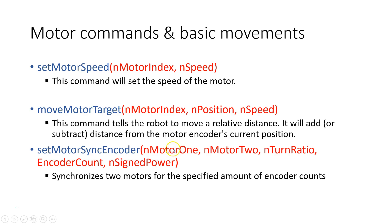The second motor command is called moveMotorTarget, which accepts three arguments. The first is your motor index. The second one is your position in degrees. The third one is your motor speed, ranging from negative 100 to 100.